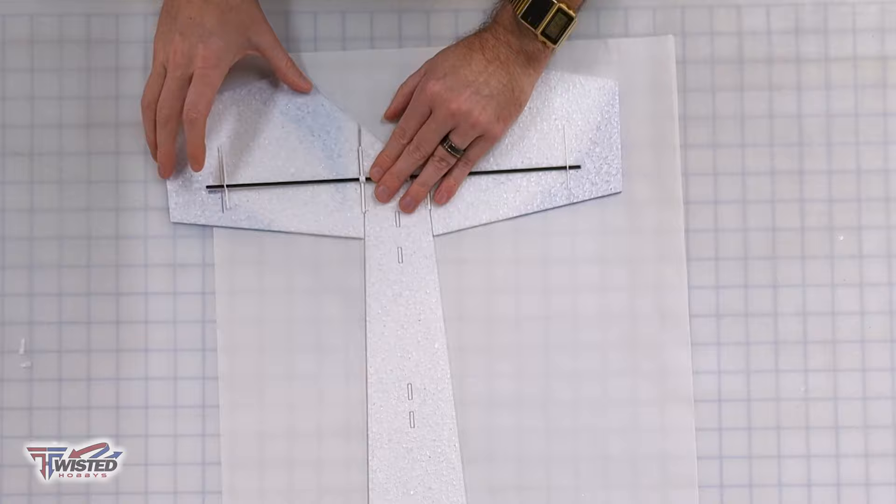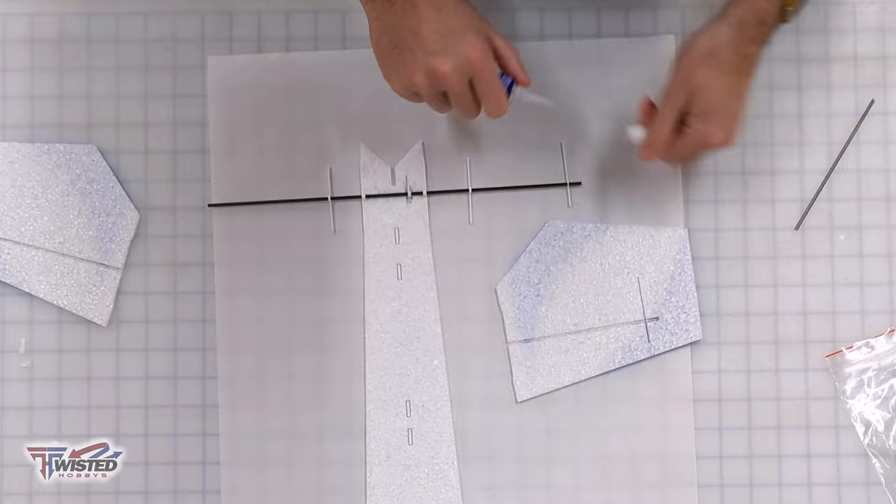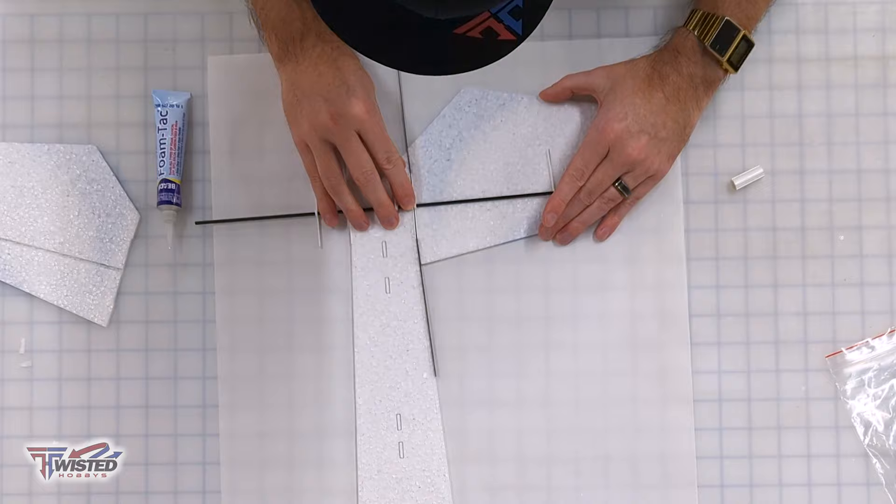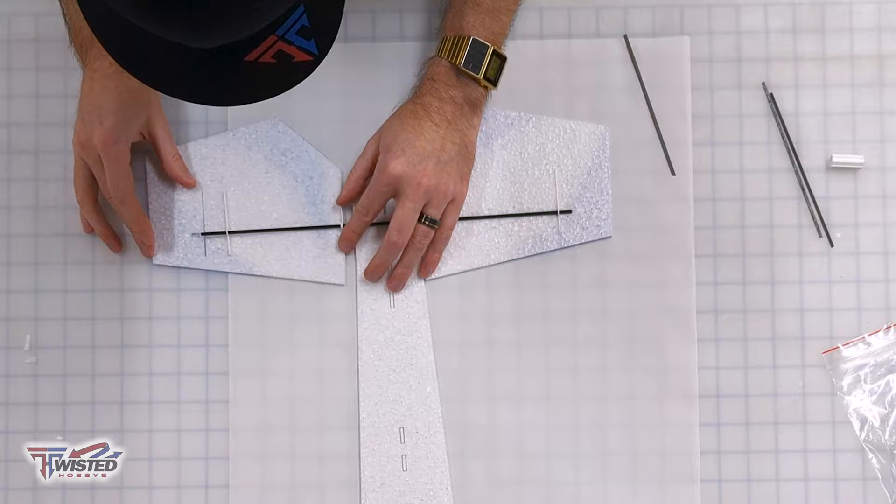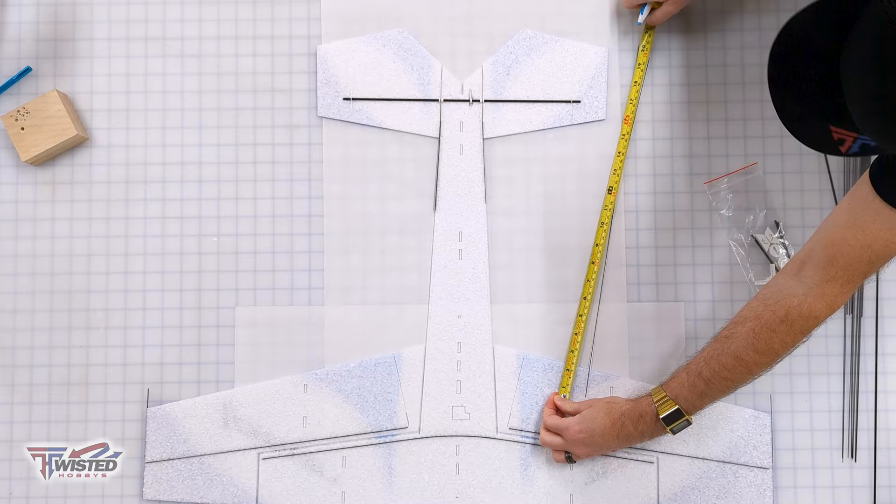Once you get it all set up into place and aligned perfectly, then you're able to start gluing it where it needs to be glued. There are some areas that don't get glue, so make sure you check the manual for that. And don't glue the elevator control horn at all until a much later step when we get to doing those push rods.